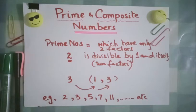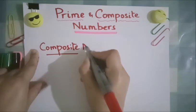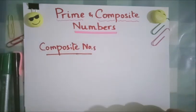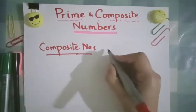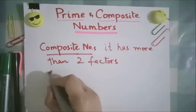Okay, next is composite numbers. As I told you that prime numbers have only two factors, so composite numbers is the inverse of prime numbers. It has more than two factors. For example,